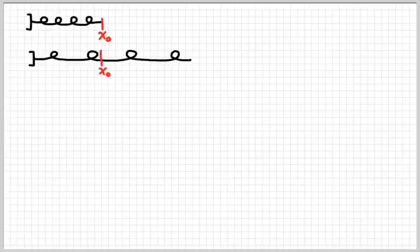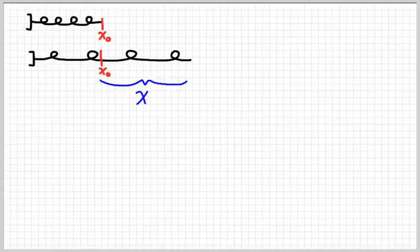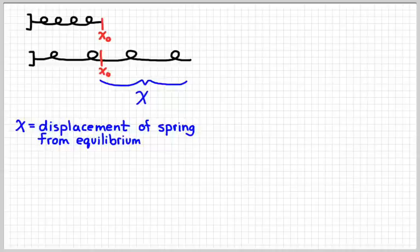So I'm going to redraw the first two pictures real quick. This distance from equilibrium, we're just going to call it x. That's kind of like the displacement of the spring. And again, we measure that from its equilibrium position. So it's measured from this spot, not from this spot. This is where the spring wants to be, and so that's where we measure its displacement from.